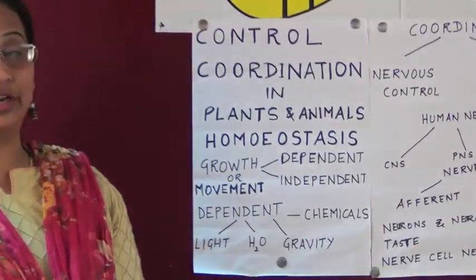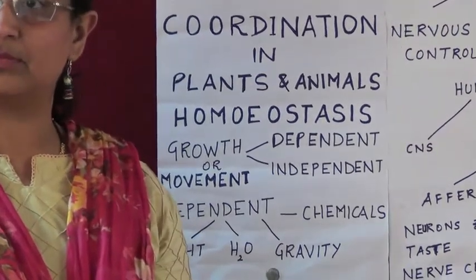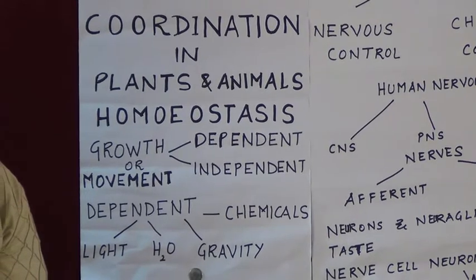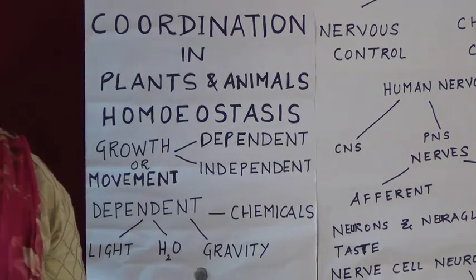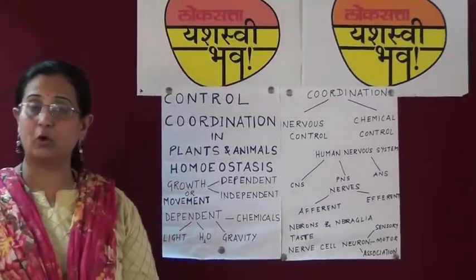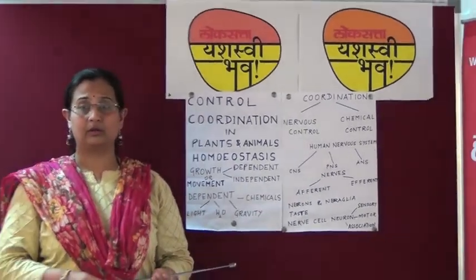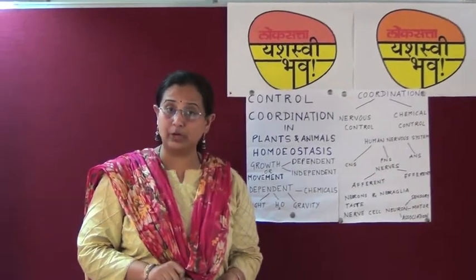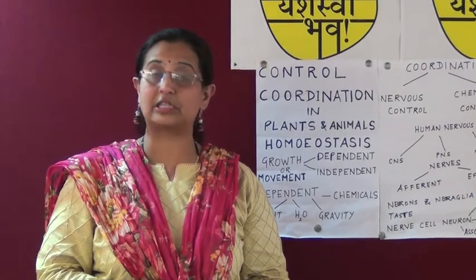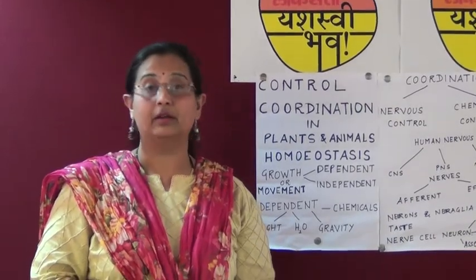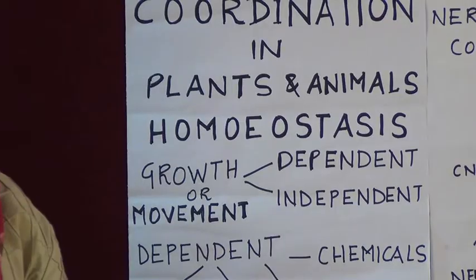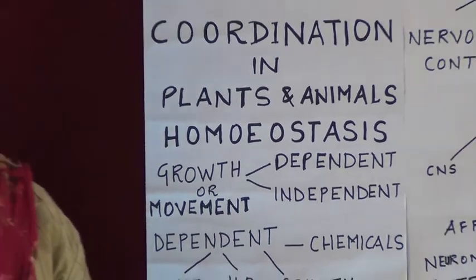Now let's see how coordination happens in plants. In the case of plants, when there is coordination happening, there is movement. But movement is either growth dependent or growth independent. Movement or growth in response to external stimuli is called tropic movement or tropism. External stimuli are water, light, gravity, and chemicals.